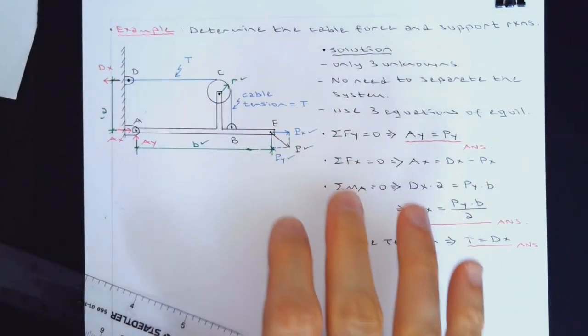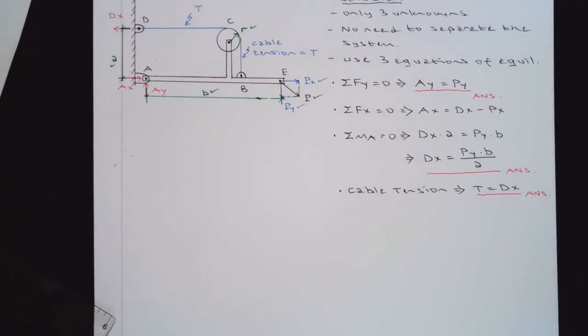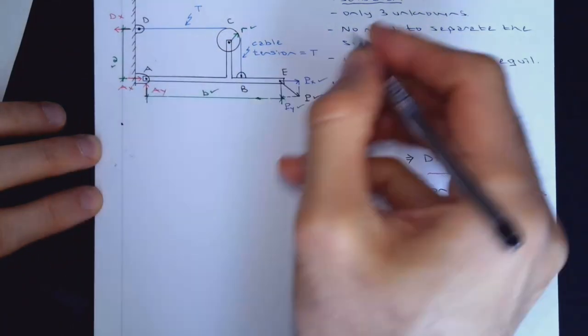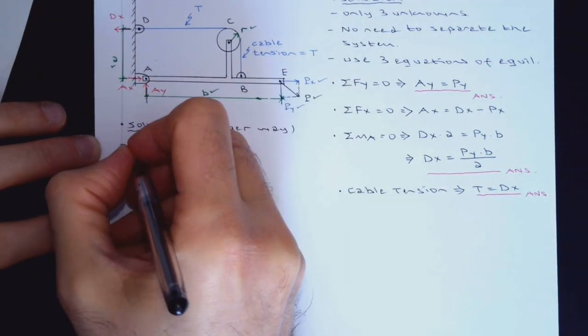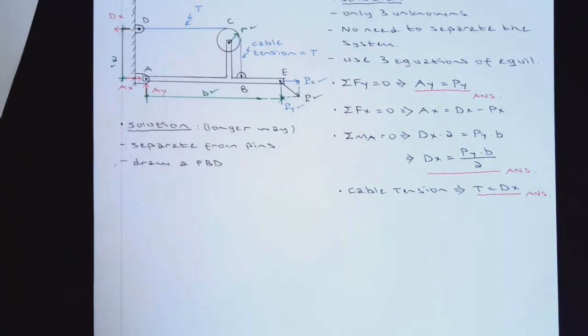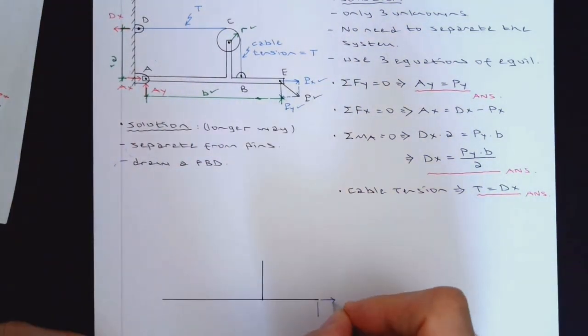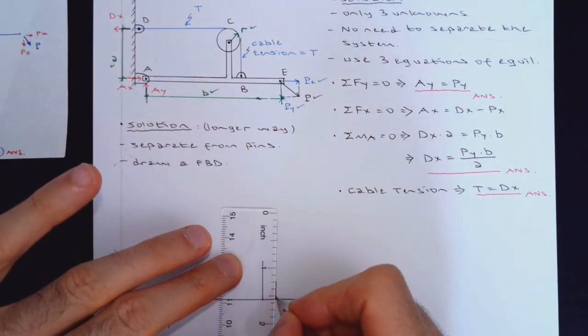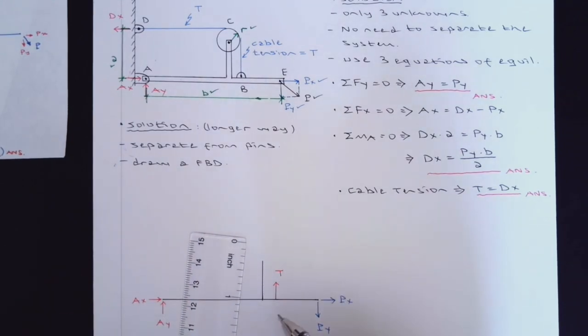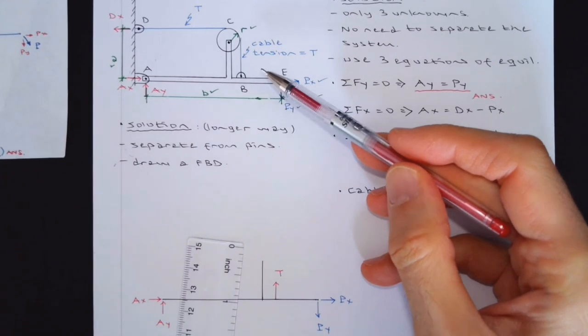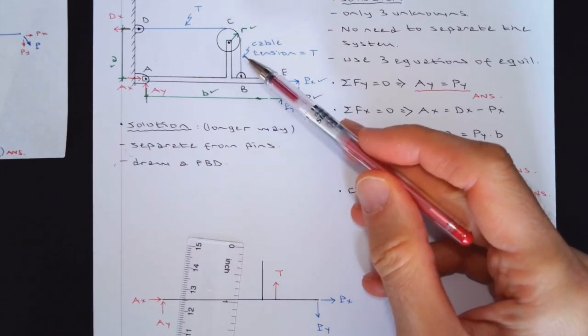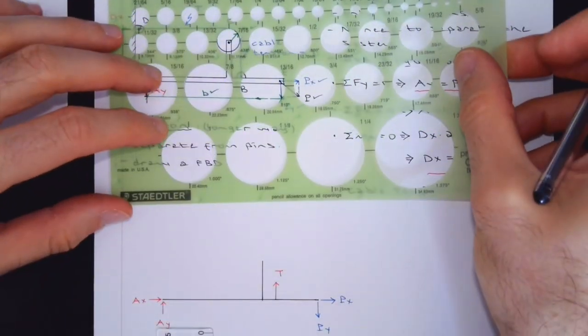But I'm going to solve it using disintegration. This is not something I recommend. You should always go with the simplest, the shortest solution. This is longer way. I'm just going to say separate from pins. And of course, you need to draw a free-body diagram. You shouldn't really forget this tension force because there is a cable. Whenever you cut a member, you are exposing the internal force and you have to deal with it.